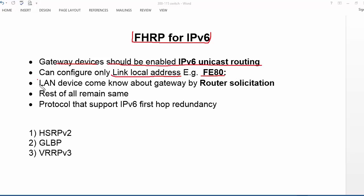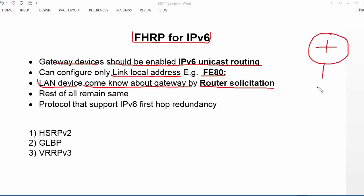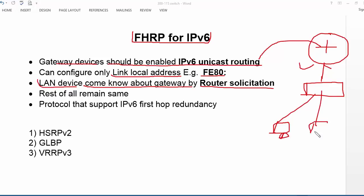Similarly, if you are talking about LAN devices, they come to know about the gateway using router solicitation. Inside the LAN there could be a PC, a printer, or some other devices which want to access the internet. They are supposed to get gateway information using router solicitation. If you attach a Layer 3 device to your LAN and assign an IPv6 address on its interface and enable IPv6 unicast routing, any device connected to the LAN can get gateway information via router solicitation. The rest of the concept remains the same.